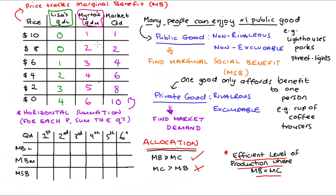For our public good, the goal is to find our marginal social benefit. Looking at the table, the first unit that Murthal would demand at a price of $10 — if that's a public good, so it's non-rivalrous and non-excludable, then Lisa could also enjoy that unit. Murthal's marginal benefit is $10 and Lisa's marginal benefit is $6. So for that first unit, the marginal social benefit is $16, that's $10 plus $6. In our table, MB subscript L is Lisa's marginal benefit and MB subscript M is Murthal's.